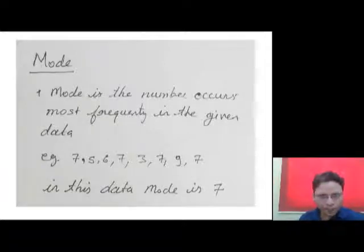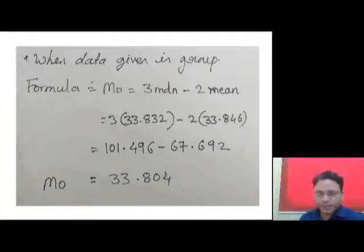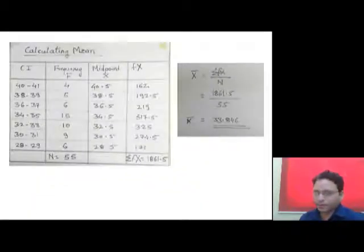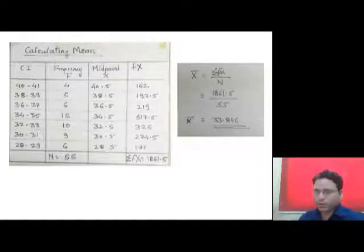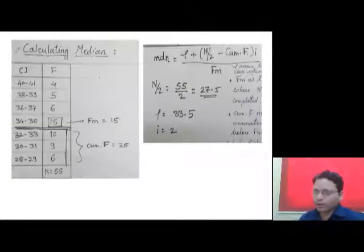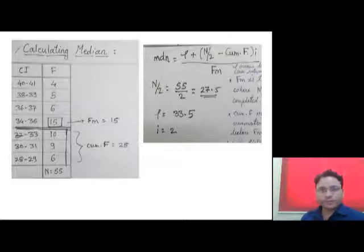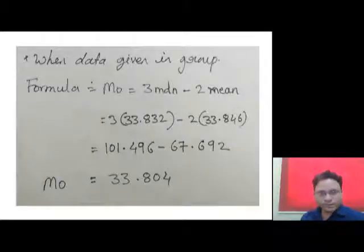When data is given in a group, how do we calculate mode? We are going to use the same data which we used for calculating mean and median. So we calculated mean, we calculated median, and now we are calculating mode.